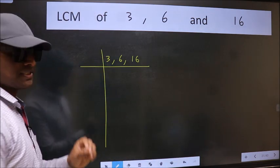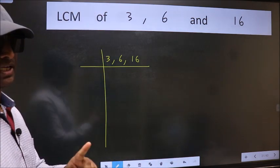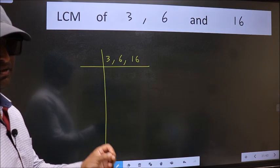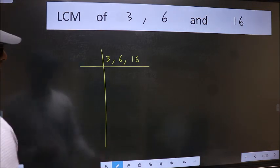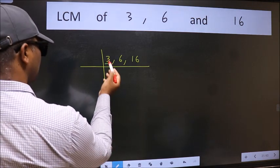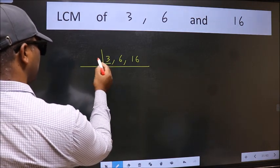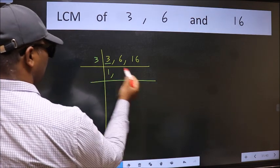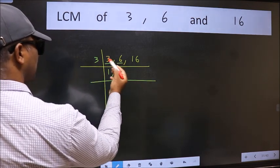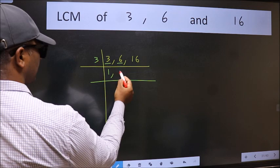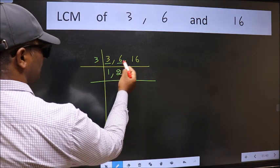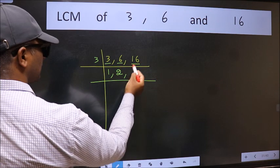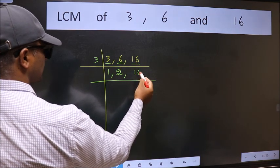This is your step 1. Now we should focus on the first number, which is 3 here. 3 is a prime number, so 3 goes into 3 once. The other number 6 — when do we get 6 in the 3 times table? 3 times 2 is 6. The other number 16 is not divisible by 3, so we write it down as it is.